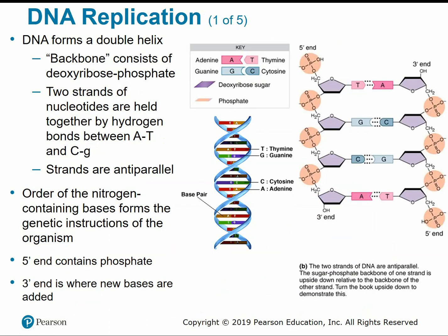To fully study and understand genetics, you need to know about DNA and DNA replication. DNA is a double helix molecule — a twisted ladder-type structure. The backbone, or the sides of the ladder, is made up of repeating sugar-phosphate groups. The rungs of the ladder are your bases: A, T, C, and G. These bases are held together by weak hydrogen bonds.